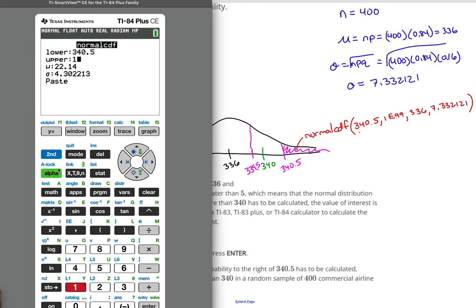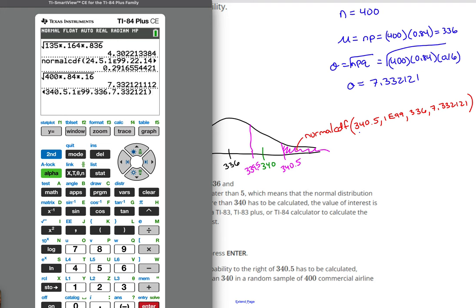Your mean is, in this case, 336. And your standard deviation is 7.332121. And then we're going to paste. And we get approximately 0.2697 if we're rounding. Approximately 0.26, which is what they got right down there.